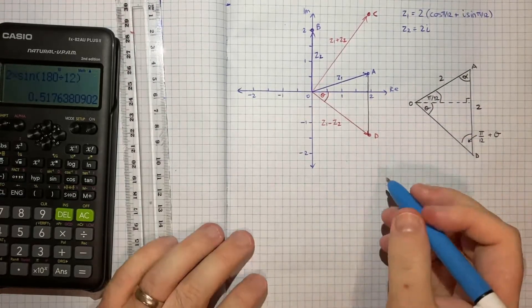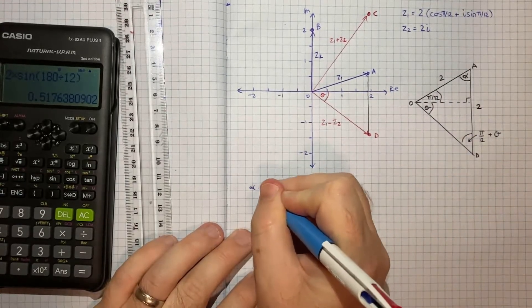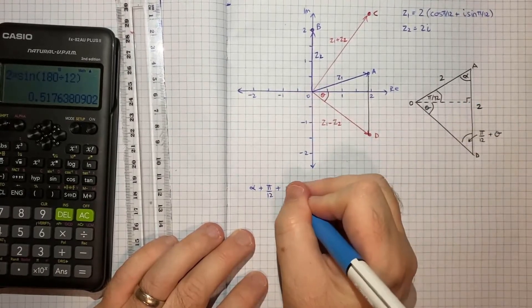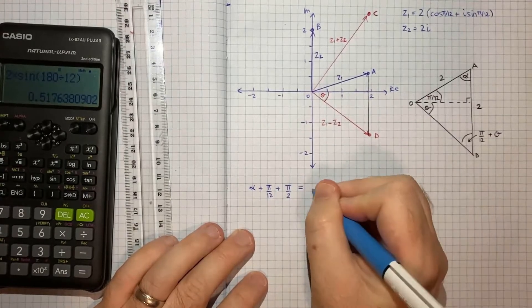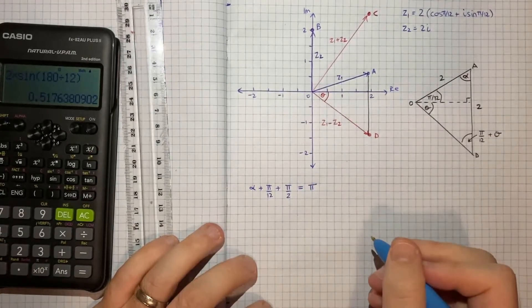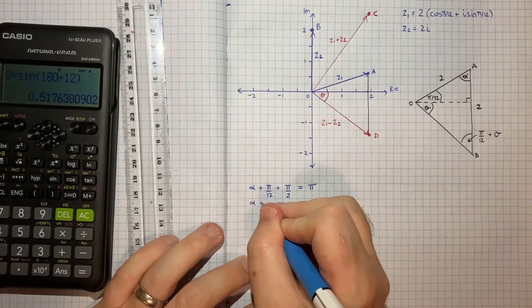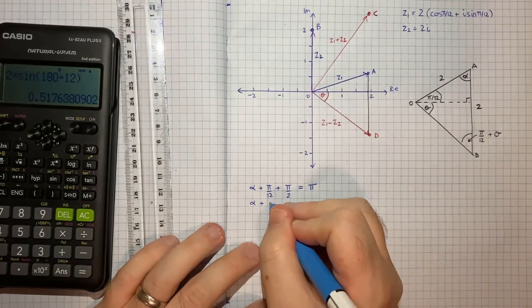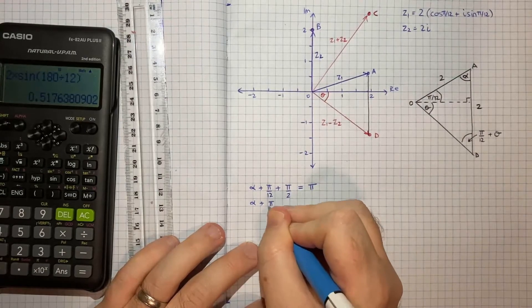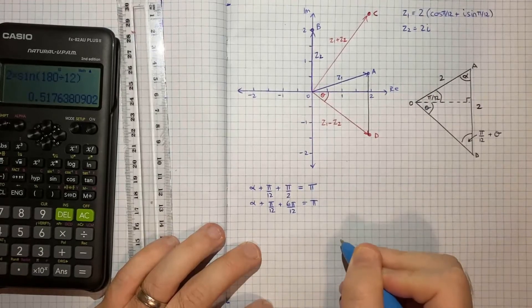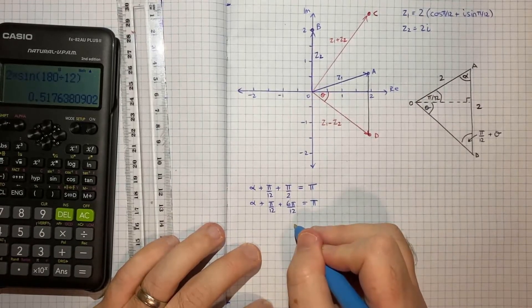So we know that alpha plus pi on 12 plus 90 degrees, which is pi on 2, that's all going to add up to 180 degrees pi. So therefore alpha plus pi on 12 plus 6 pi on 12 will equal pi.